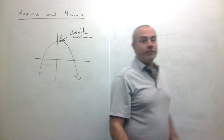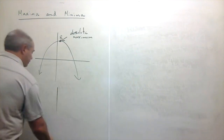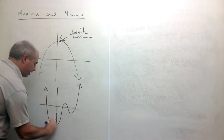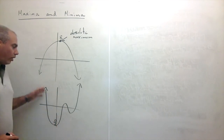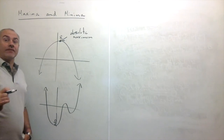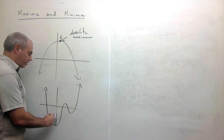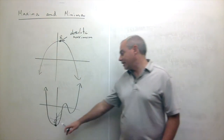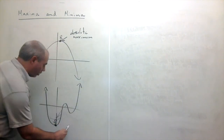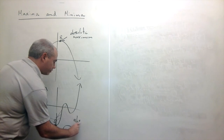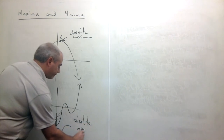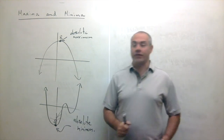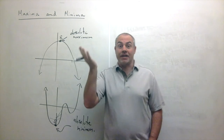Similarly, consider another graph where someone is standing down at a low point. He can look all around him on this curve — he can see infinitely far — and everywhere he looks, things are taller than he is. No point on that curve is lower than where he's standing. In that case, we call that point an absolute minimum — the absolutely lowest point on the curve.